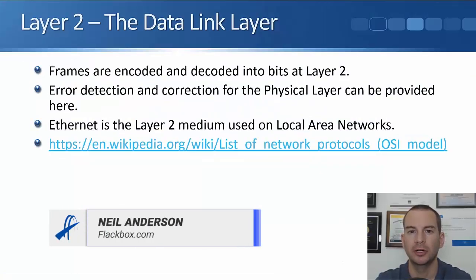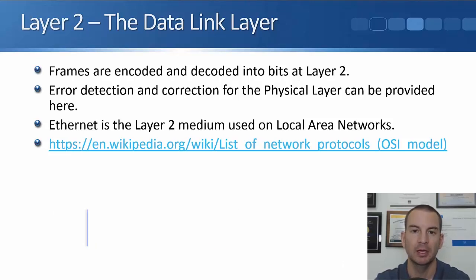In this lecture you'll learn about Layer 2 of the OSI reference model, which is the Data Link Layer. At Layer 2, frames are encoded and decoded into bits ready to put onto the physical layer. Error detection and correction for the physical layer can be provided here depending on the protocol that we're using.